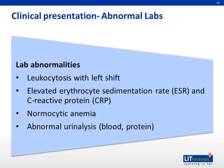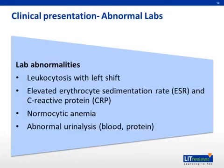Lab abnormalities. Patients with infective endocarditis may often show a leukocytosis with an increased proportion of neutrophils. They will also commonly demonstrate elevated ESR and CRP levels, as well as anemia. Many patients will have hematuria and proteinuria, but you should also look for red cell casts, an indication that the patient has glomerulonephritis, one of the immunologic phenomena associated with endocarditis.